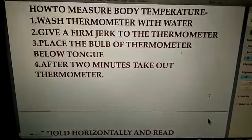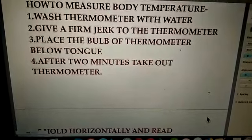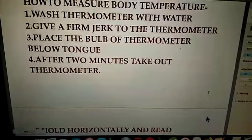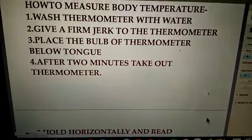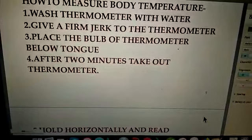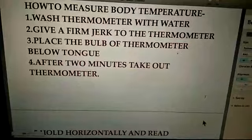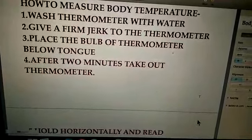Now, if we have to measure body temperature, then we will use the following steps. First, wash the thermometer with water. Second, give a firm jerk to the thermometer. Third, place the bulb of thermometer below the tongue. Fourth, after two minutes, take the thermometer out. Then fifth, hold horizontally and read the thermometer.